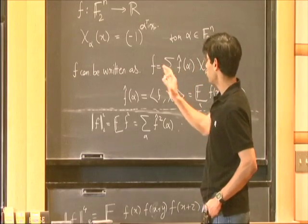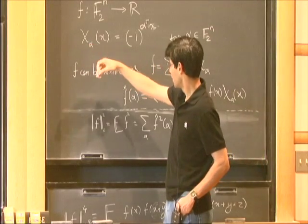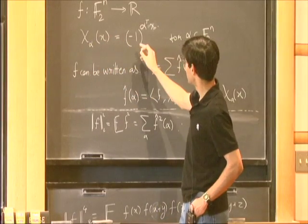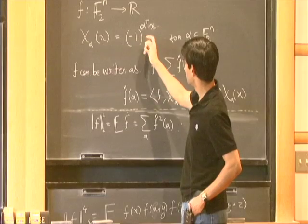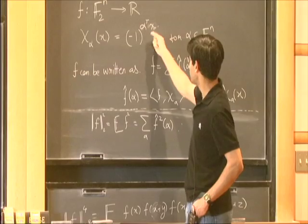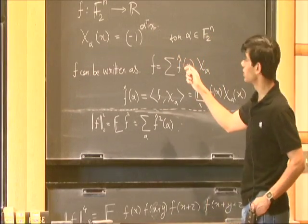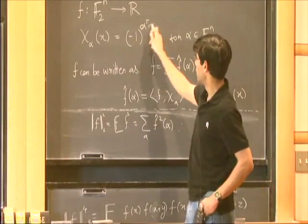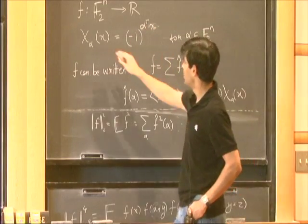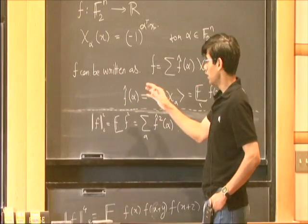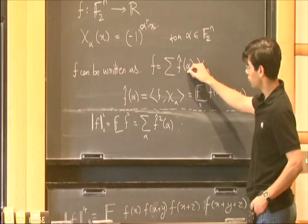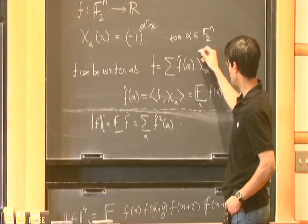For Fourier analysis, certain special functions are important, which I denote by chi_alpha(x), which is minus one to the power of a linear function. I take the inner product of alpha and x, where alpha and x are both vectors in F_2^n. So this is just a bit — a plus or minus one valued function. These functions form an orthonormal basis for this space, and you can write any function f as a linear combination of these functions. The coefficient is the Fourier coefficient, and these are called Fourier characters.